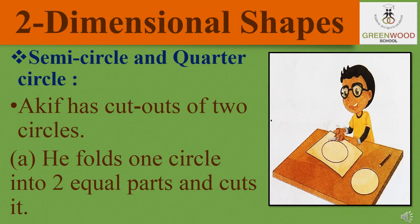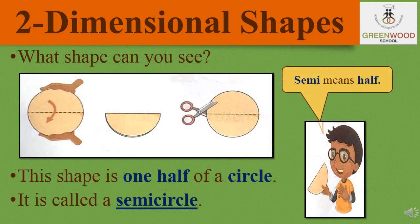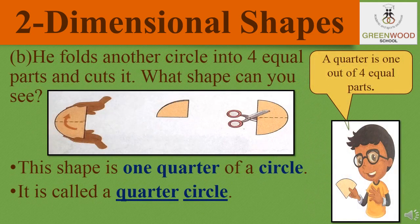Our next topic is two-dimensional shapes: semi-circle and quarter-circle. Akeef has cutouts of two circles. He folds one circle into two equal parts and cuts it. As you can see in the picture, he cuts the circle in two equal parts from the middle. This shape is one half of a circle, which is also called a semi-circle. Semi means half. Now, he folds another circle into four equal parts and cuts it. This shape is one quarter of a circle, which is also called a quarter-circle.